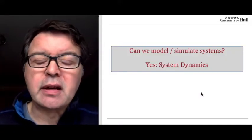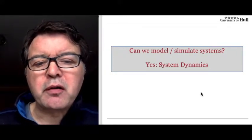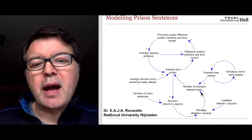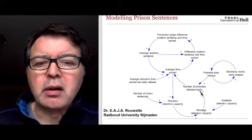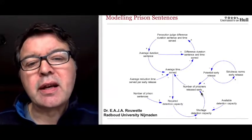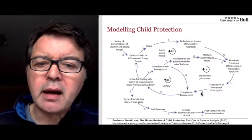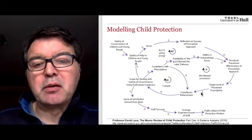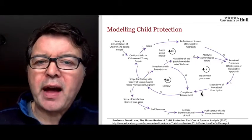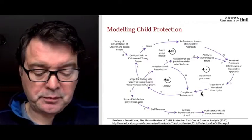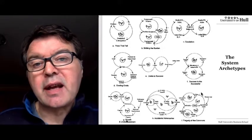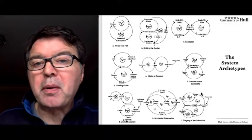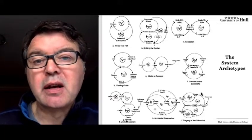In terms of tools and methods, there are tools for modeling and simulating systems. For example, there's work from Dr. Rue in the Netherlands trying to model the prison service as a system using influence diagrams done with a group of people, and research by Professor David Lane from Reading building a model of the child protection system in the UK to understand how that service could be improved. Because people have been doing this for many years — it started at MIT with Jay Forrester — certain system archetypes have been noticed to crop up, and Peter Senge made that famous with a book called The Fifth Discipline.